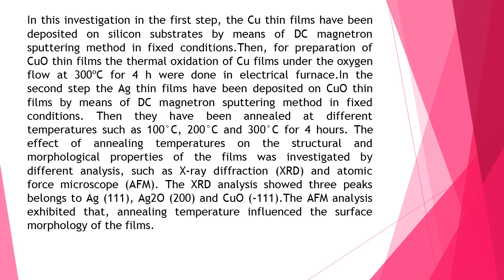In the second step, the Ag thin films have been deposited on CuO thin films by means of DC magnetron sputtering method in fixed conditions. Then they have been annealed at different temperatures such as 100 degrees Celsius, 200 degrees Celsius, and 300 degrees Celsius for four hours.